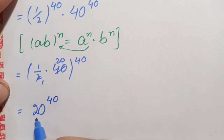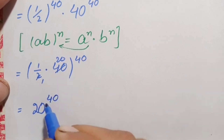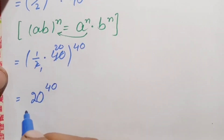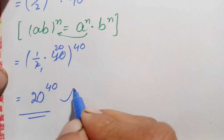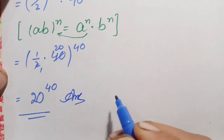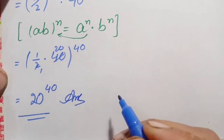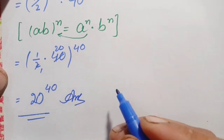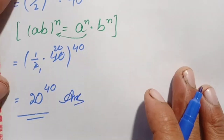So 20 raised to power 40 is our final answer and the value of the above exponential math problem using the first method.